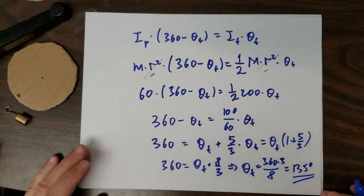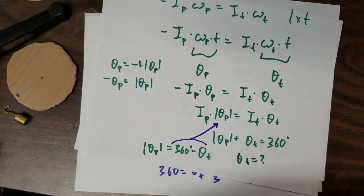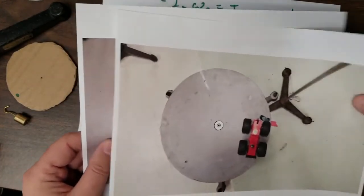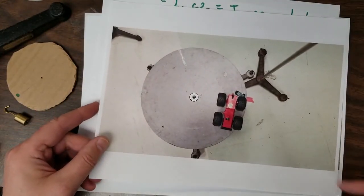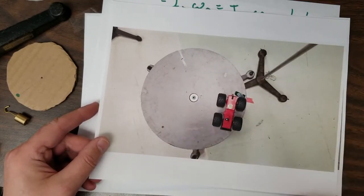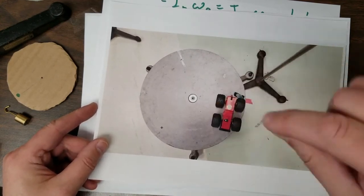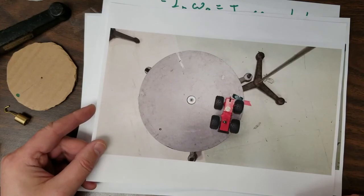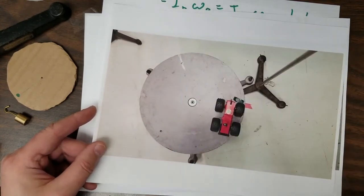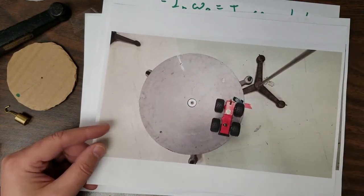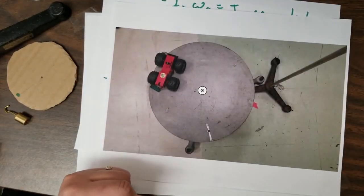And now you can see a short video — an example of what could happen if we try to do it. This is a turntable, and I have a motorized car. If I let it go, it starts moving. I'll have to use my hand to turn it because I cannot turn the wheels — you can pretend you didn't see my hand. And eventually, this is what's going to happen.